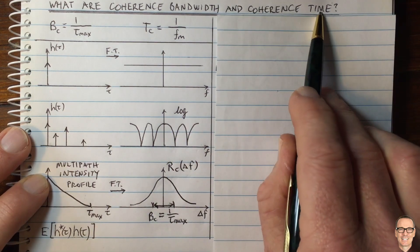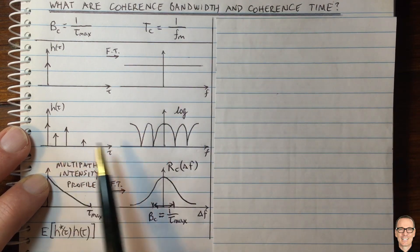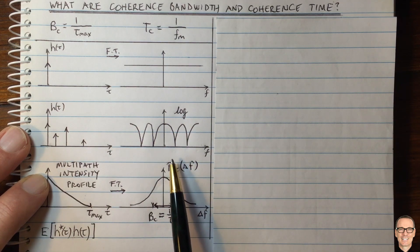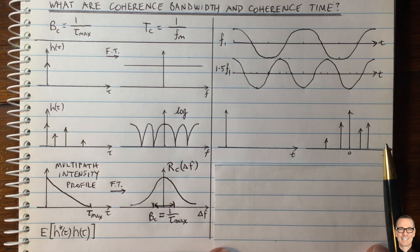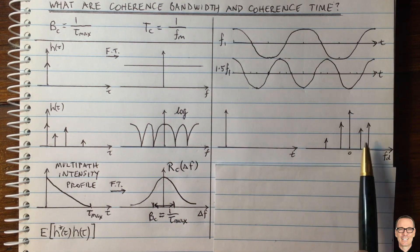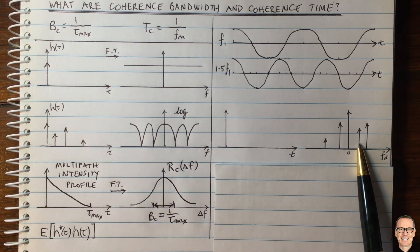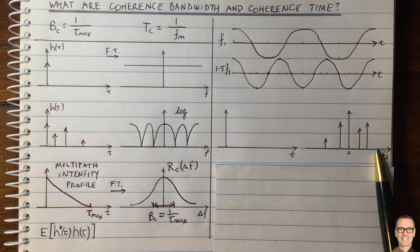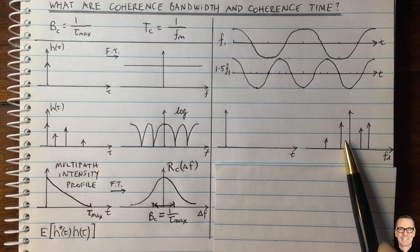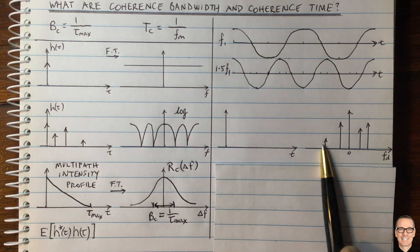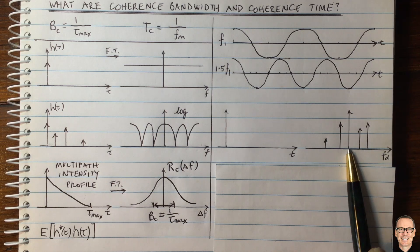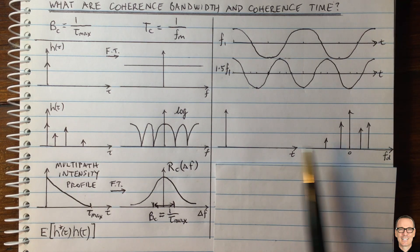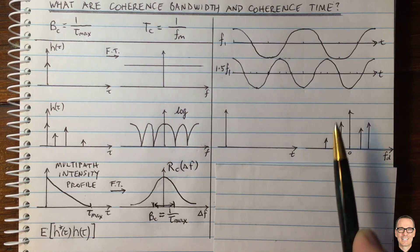Now let's think about the coherence time. It's a very similar concept to coherence bandwidth, except here we start in the frequency domain and think about its impact in the time domain. In the frequency domain, these multiple paths — if there's movement — result in Doppler shifts of the signal. Each of these different paths comes in at a different Doppler shift. Some will shift to higher frequencies, some will have negative shifts.